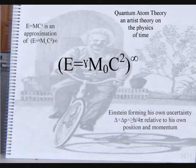The brackets represent the boundary condition of the reference frame, formed by the energy, and the infinity symbol represents an infinite number of reference frames that make up our universe.